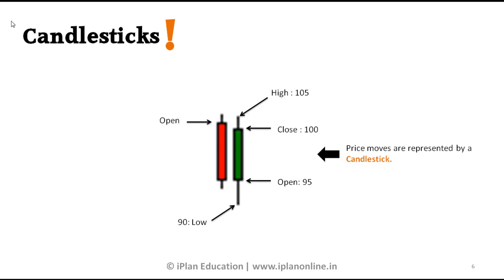In the red candle, the open price is at the top and the close price is below. The main difference between red and green candles is that in a green candle, the close price is above or more than the open price. In a red candle, the close price is less than the open price. So when there is a reduction in price on a particular day, the candle is red, and when there is an increase in price, you see a green candle.